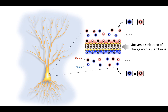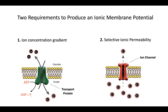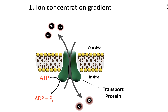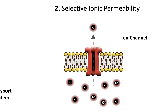So how does this uneven distribution of charge occur? There are two requirements to produce a membrane potential in cells. The first is the presence of an ion concentration gradient. In most cases, the ion concentration gradients that exist between the inside and outside of cells are produced by the action of transport proteins — for instance, the sodium-potassium pump, which brings in two potassium ions and extrudes three sodium ions per cycle. The second requirement is the presence of selective ionic permeability, imparted by the presence of ion channels. Ion channels are integral proteins that span the lipid bilayer, and they allow for selective ionic movement down their electrochemical gradients. In this case, we're looking at a potassium channel that allows potassium to flow from inside the cell to outside the cell down its concentration gradient.